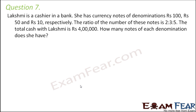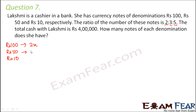Question number 7: Laxmi is a cashier in a bank. She has currency notes of denominations rupees 100, rupees 50, and rupees 10 respectively. The ratio of the number of these notes is 2 is to 3 is to 5. The total cash with Laxmi is rupees 4 lakhs. How many notes of each denomination does she have? Since the notes are in the ratio 2:3:5, let rupees 100 be 2x, rupees 50 be 3x, and rupees 10 be 5x.